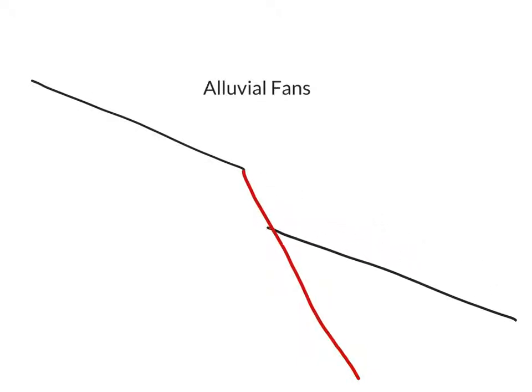As mountains grow through tectonic uplift, alluvial fans may form at their base, where the gradient of mountain streams abruptly decreases, causing streams to suddenly slow and deposit their load of sediment.